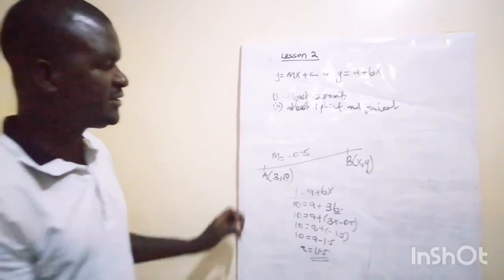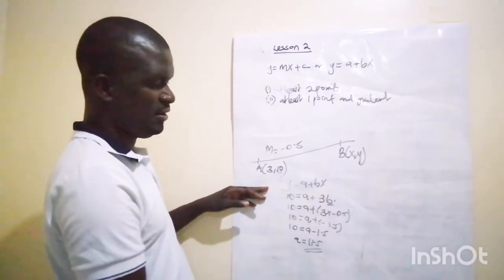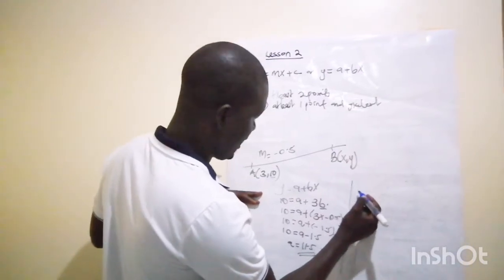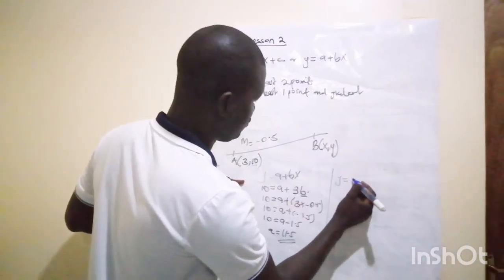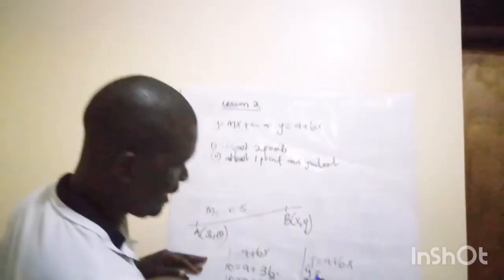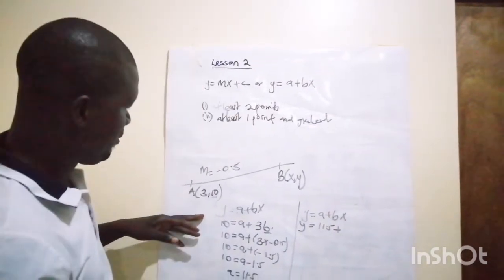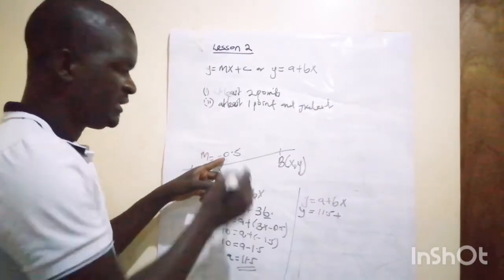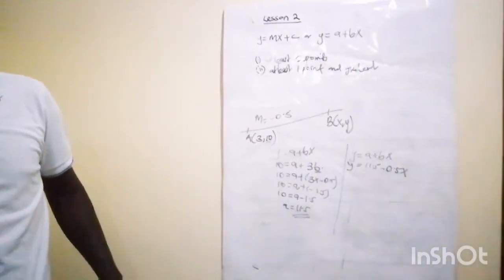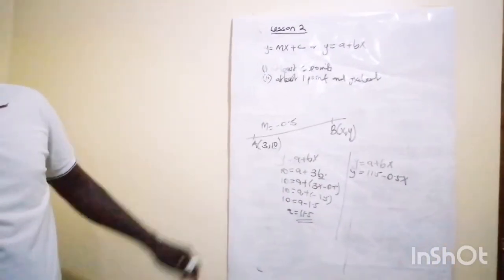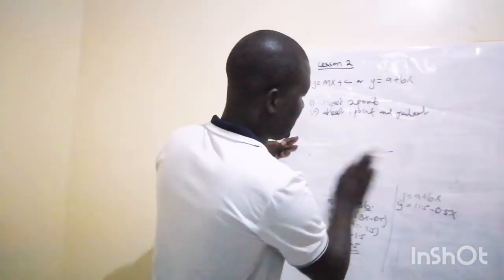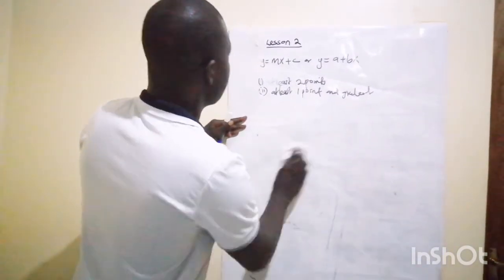Now that we have a = 11.5 and b = -0.5, the equation of the straight line is: y = 11.5 - 0.5x. That is the complete equation. So those are the properties of a straight line, which are very important to know for an exam.